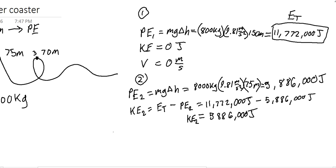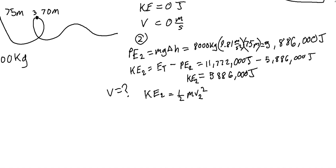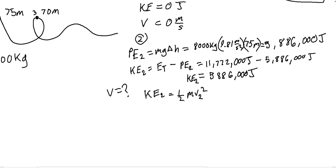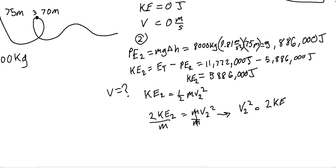Now that we know our kinetic energy at 2, if we're trying to find our velocity, we know KE at 2 equals one-half mv₂ squared. We can rearrange this: multiply both sides by 2 to get 2 times KE at 2 equals mv₂ squared. Divide both sides by m, which gives us v₂ squared equals 2·KE divided by m. Then take the square root of both sides, so v₂ equals the square root of two times the kinetic energy divided by the mass.